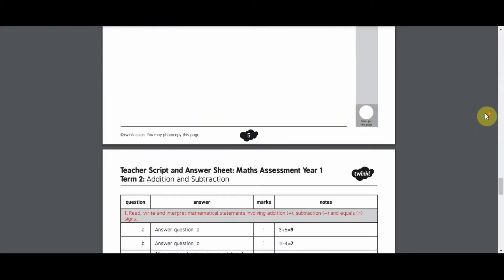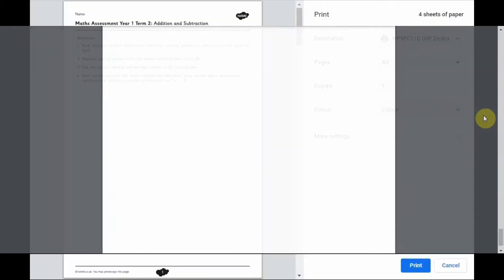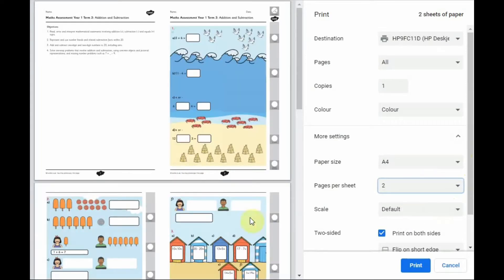The aims assessed by each question are clearly stated on the adult guidance and a marking scheme is provided. The beauty of these is there is no reading involved for the children - all questions are read out by the adults and they each have different themes.